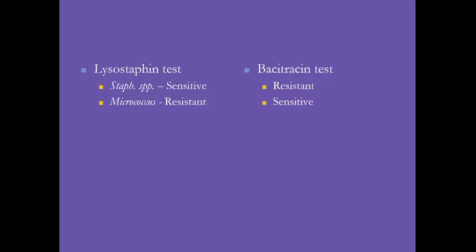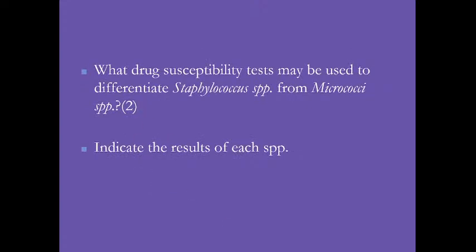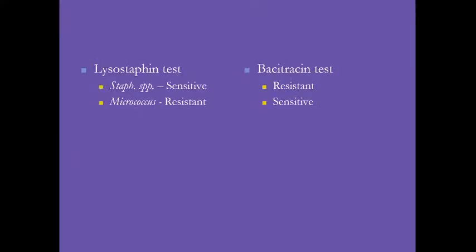So when given a gram-positive organism in tetrads, novobiocin resistant, lysostaphin sensitive, and bacitracin resistant — that is Micrococcus. You need to be able to identify organisms from a combination of characteristics. That's why an identification algorithm is important.